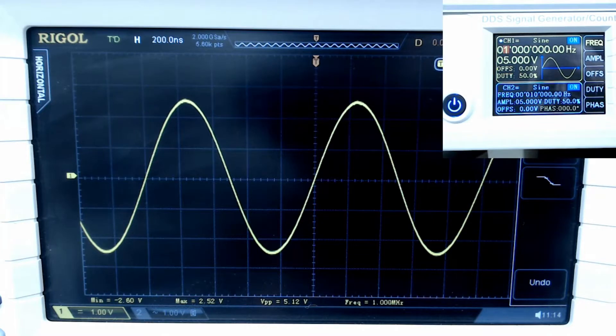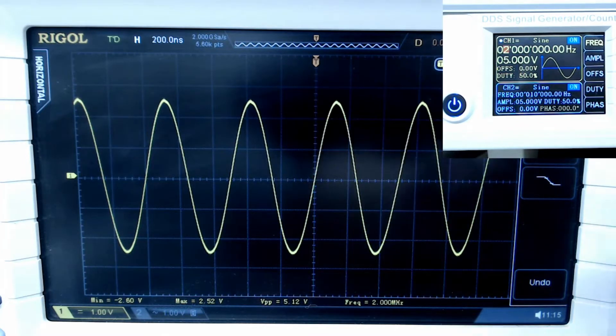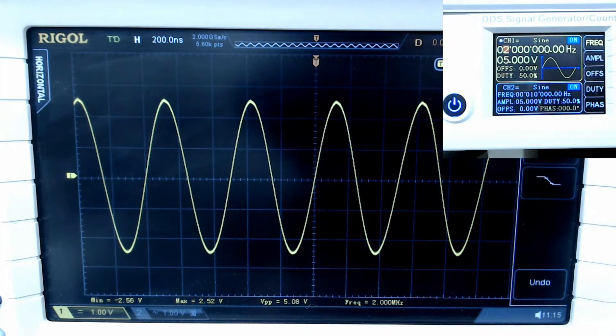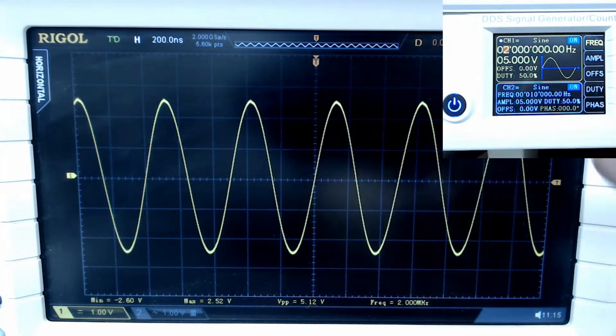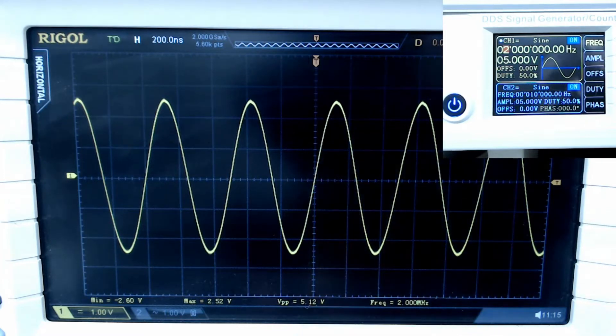If I go over here and change this to two megahertz, you can actually see the output there changing on the Rigol scope. Here in this menu you can see it says two megahertz, there's the five volts peak to peak.